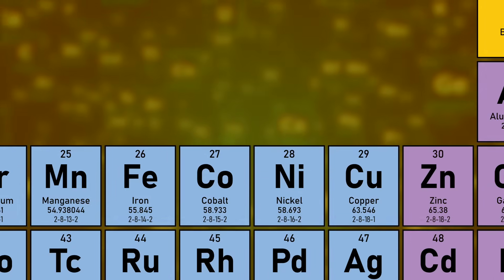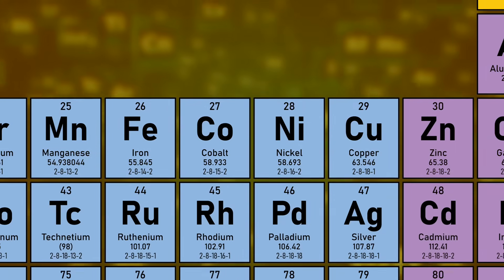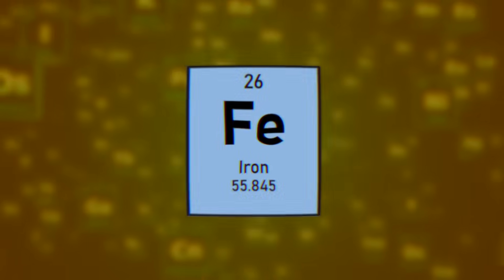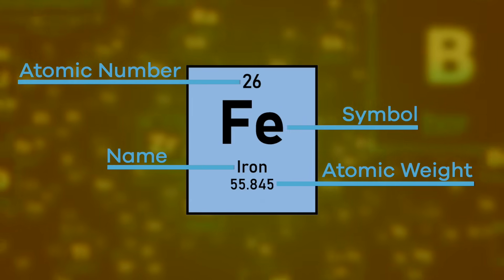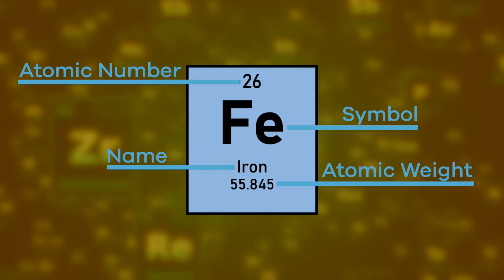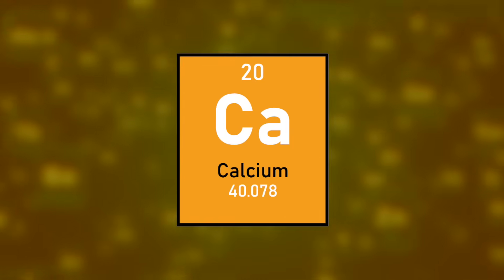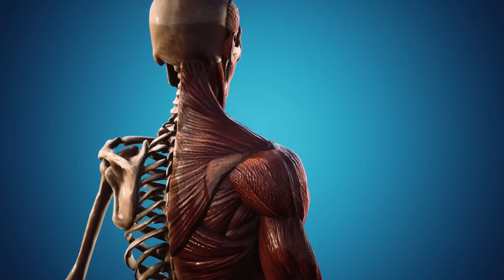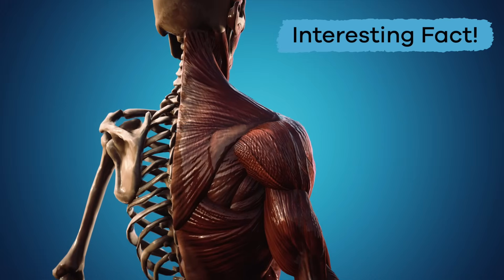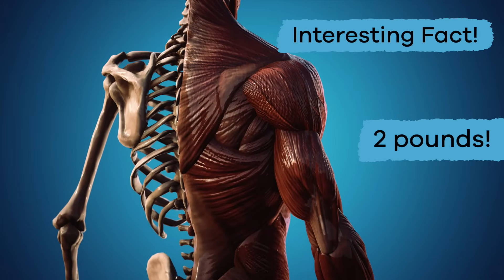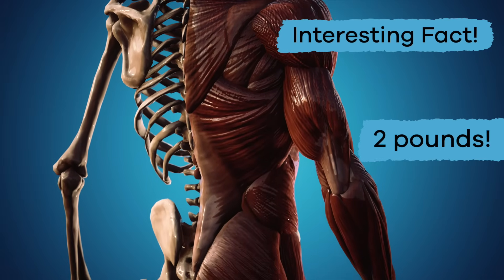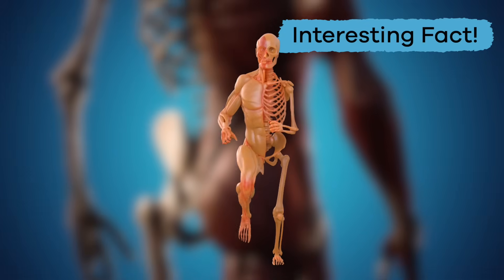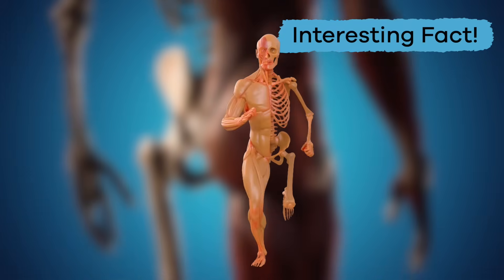Each element on the periodic table has several parts you can easily spot. Each element has a name and a chemical symbol. This is the symbol and name for the element calcium. Here's an interesting fact about calcium: you have about two pounds of it inside your body. Seriously! It is mostly located in your bones and teeth.